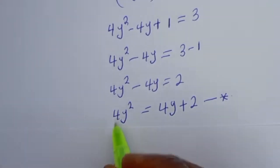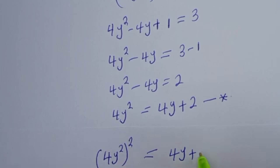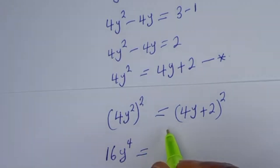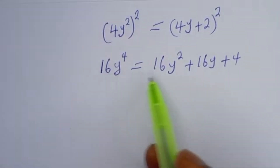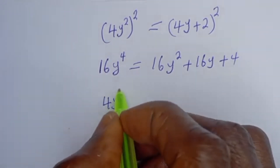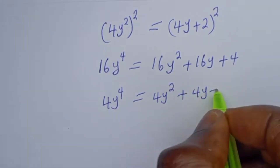Now let's square both sides of equation star again. If we square both sides, we have (4y²)² = (4y + 2)², which gives 16y⁴ = 16y² + 16y + 4. Dividing all terms by 4, we get 4y⁴ = 4y² + 4y + 1.